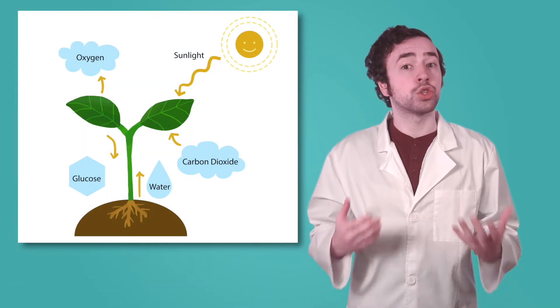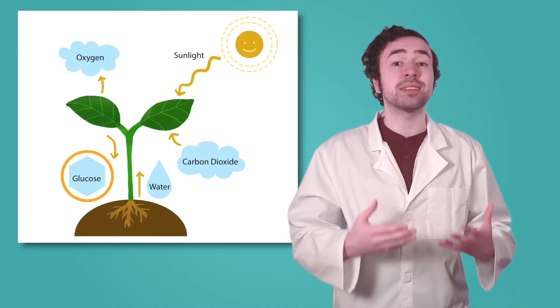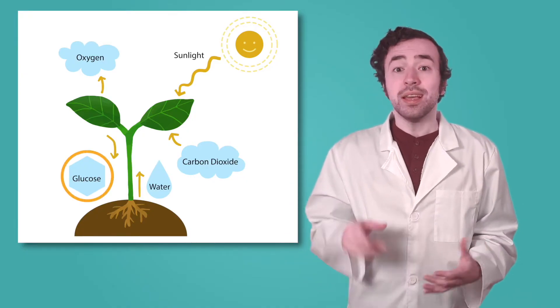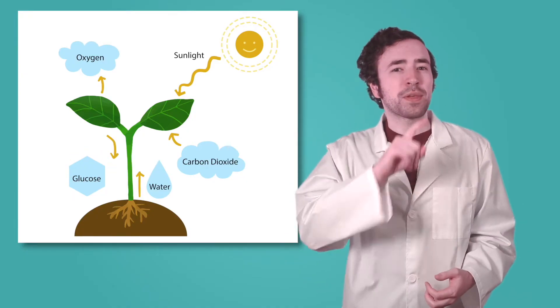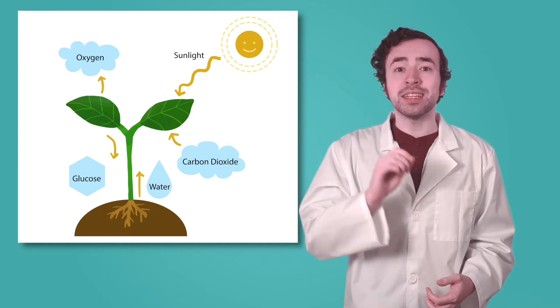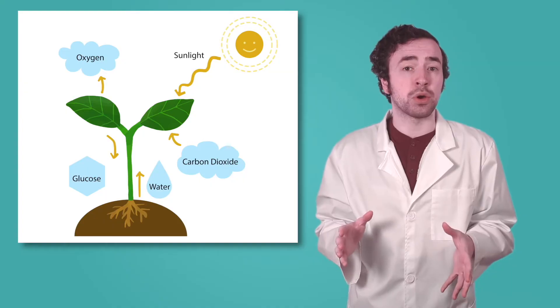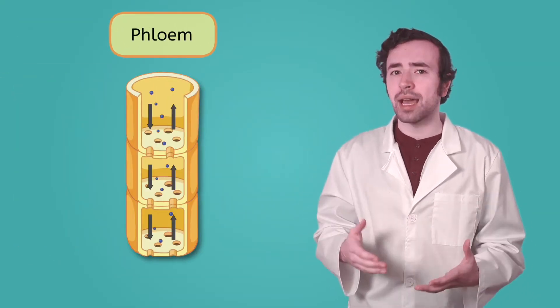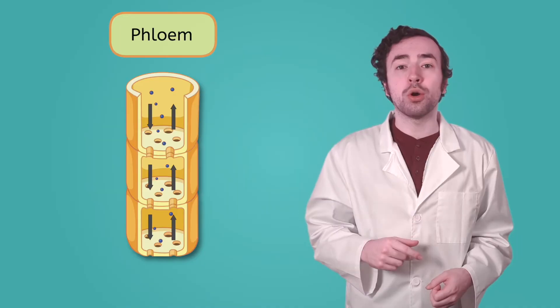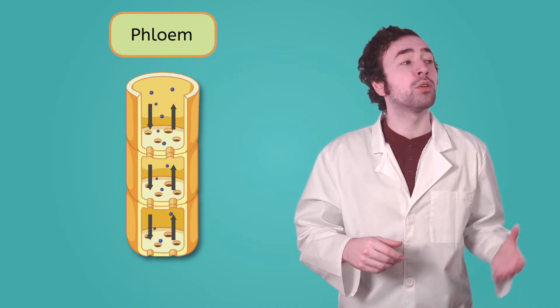Photosynthesis produces sugars, like glucose, that the plant can use for energy — this is the stuff that the mitochondria convert into usable energy. Cells all over the plant need glucose, not just the leaves. So just like how water is transported through the xylem, glucose is transported through tubes called the phloem. All of these structures help the plant perform photosynthesis, which allows all of its cells to have energy.